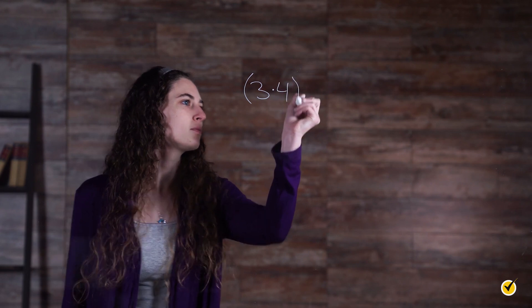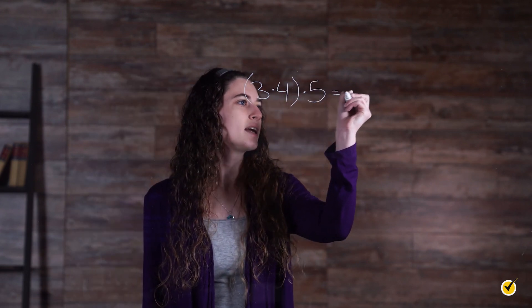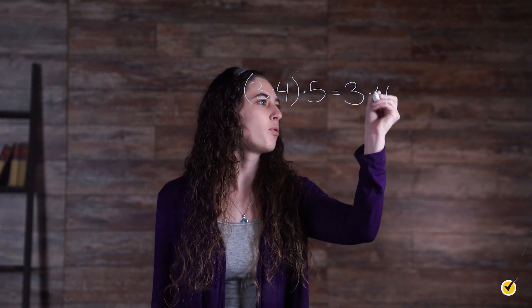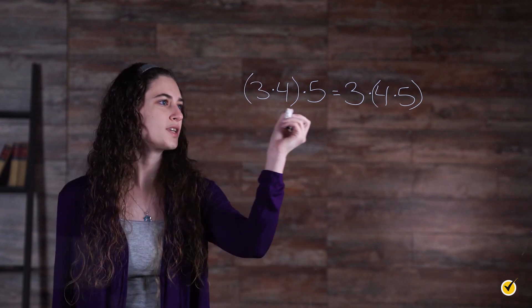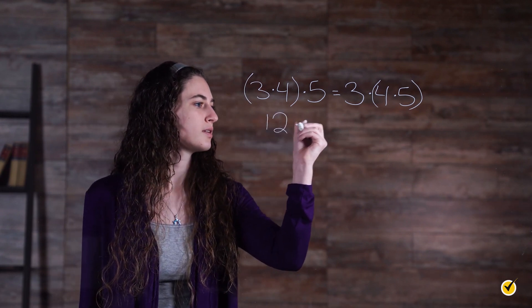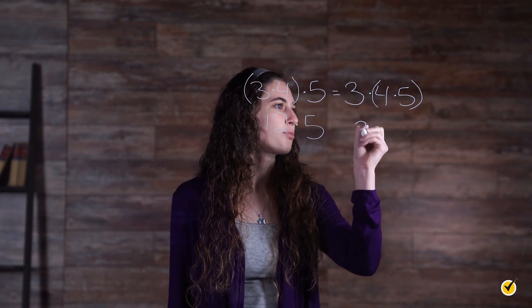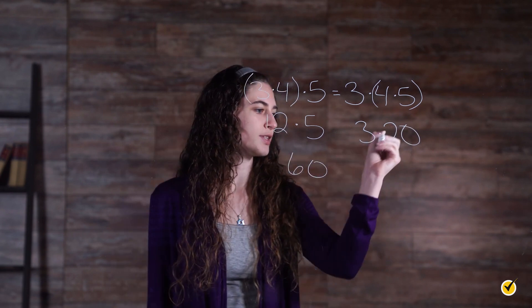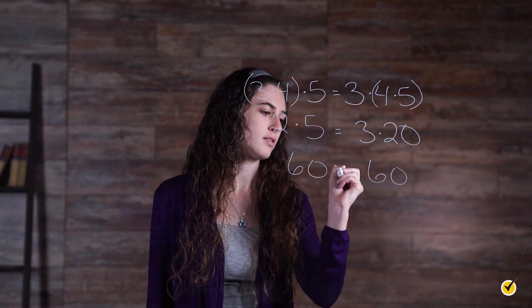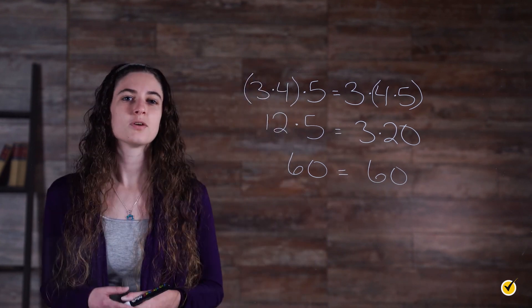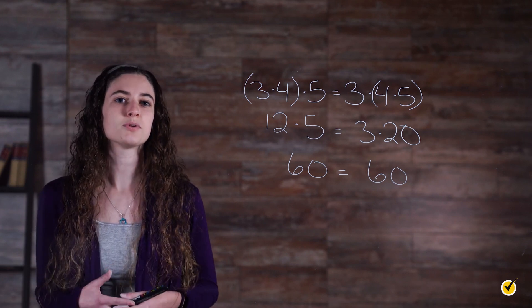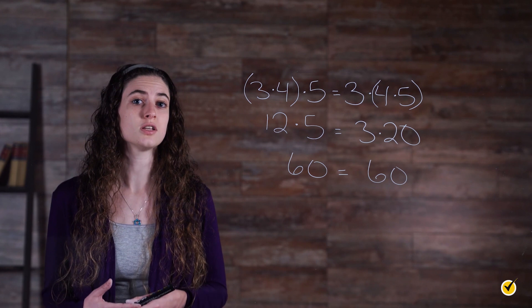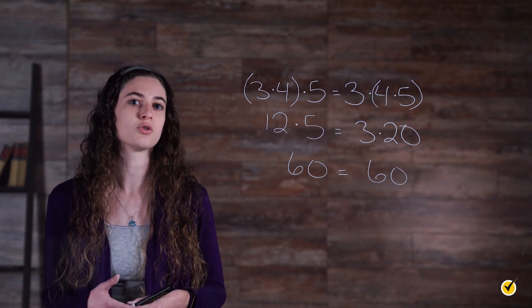Likewise, the order that we perform multiplication does not matter either. Let's say we have (3 times 4) times 5 equals 3 times (4 times 5). 3 times 4 is 12, and 12 times 5 is 60. And 4 times 5 is 20, and 3 times 20 is also 60. So 60 is equal to 60. The commutative property of multiplication shows that it is acceptable to rearrange terms when multiplying. In contrast, the associative property of multiplication moves the parentheses to order the multiplication.